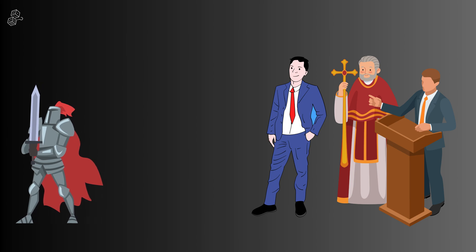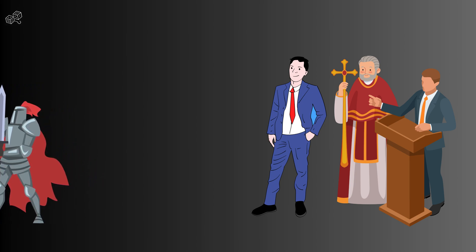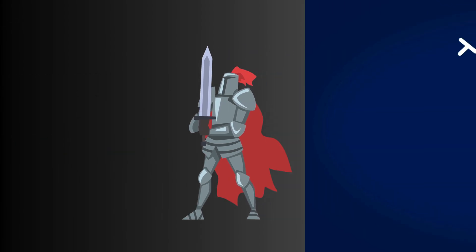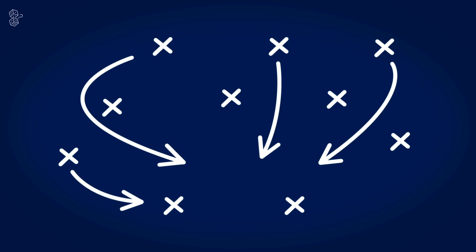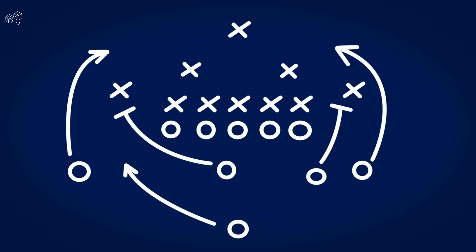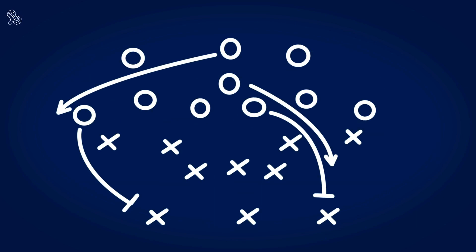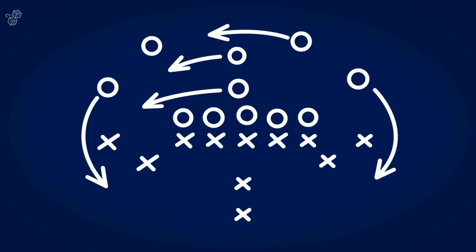By refusing to play their game, he changes the rules entirely. He demonstrates that true power isn't just in titles, wealth, or spiritual authority — it's in the choices we make and the ability to disrupt expectations. Now, in game theory, strategies are like tools in a toolbox, each designed to handle different scenarios where players are making decisions that affect each other. Here are a few more tactics.